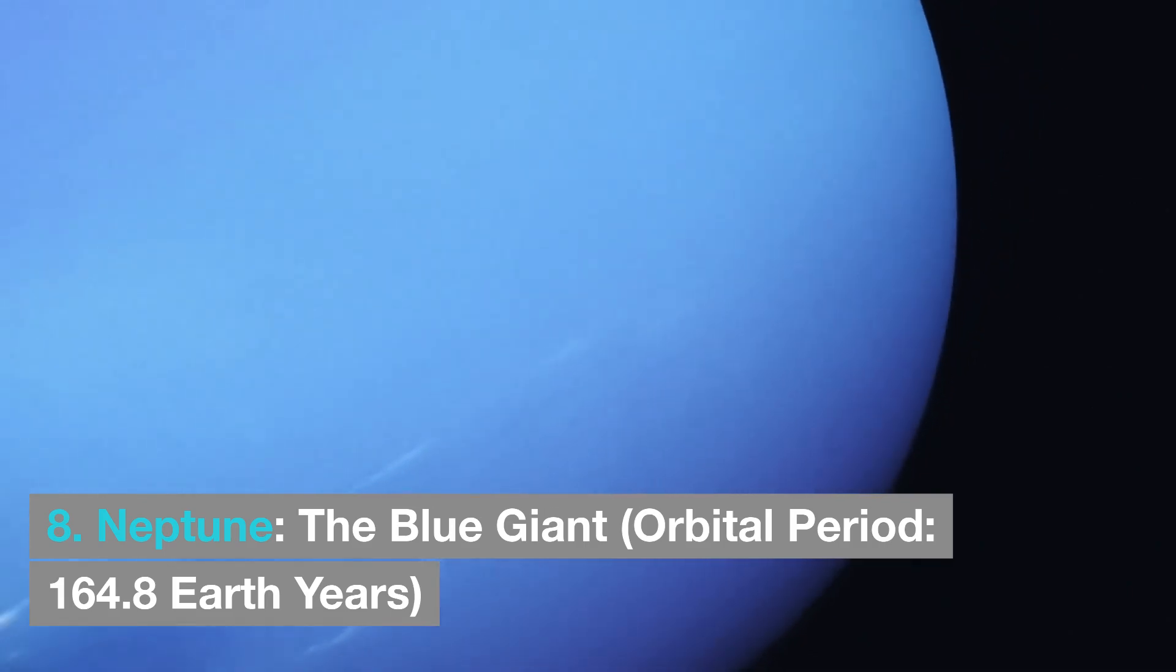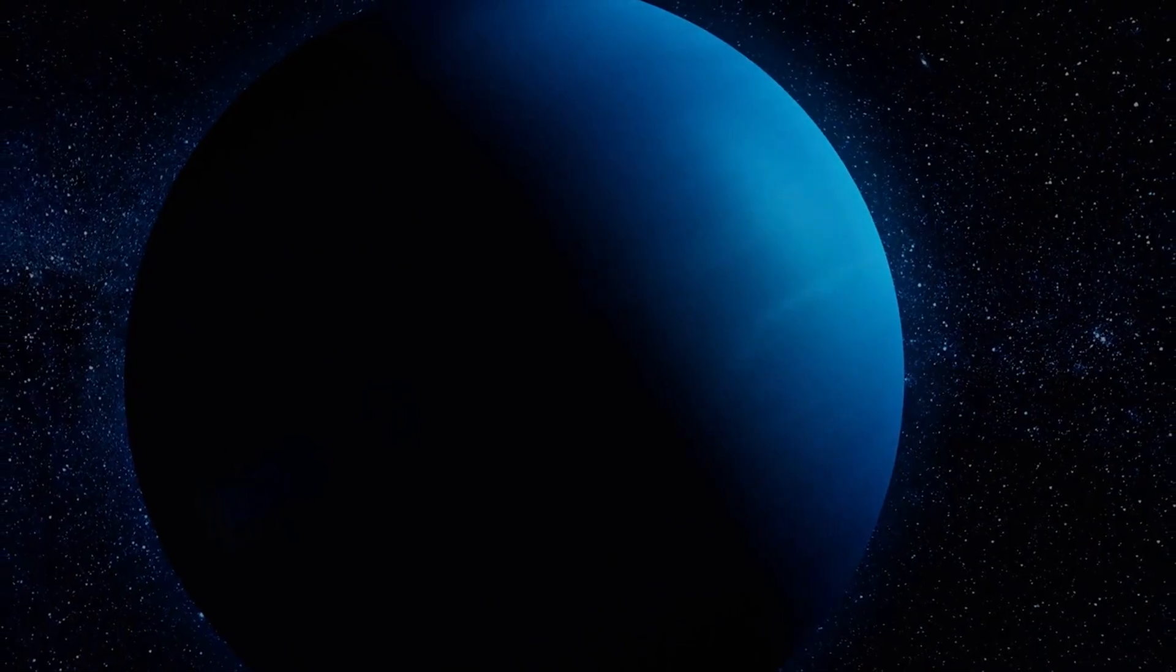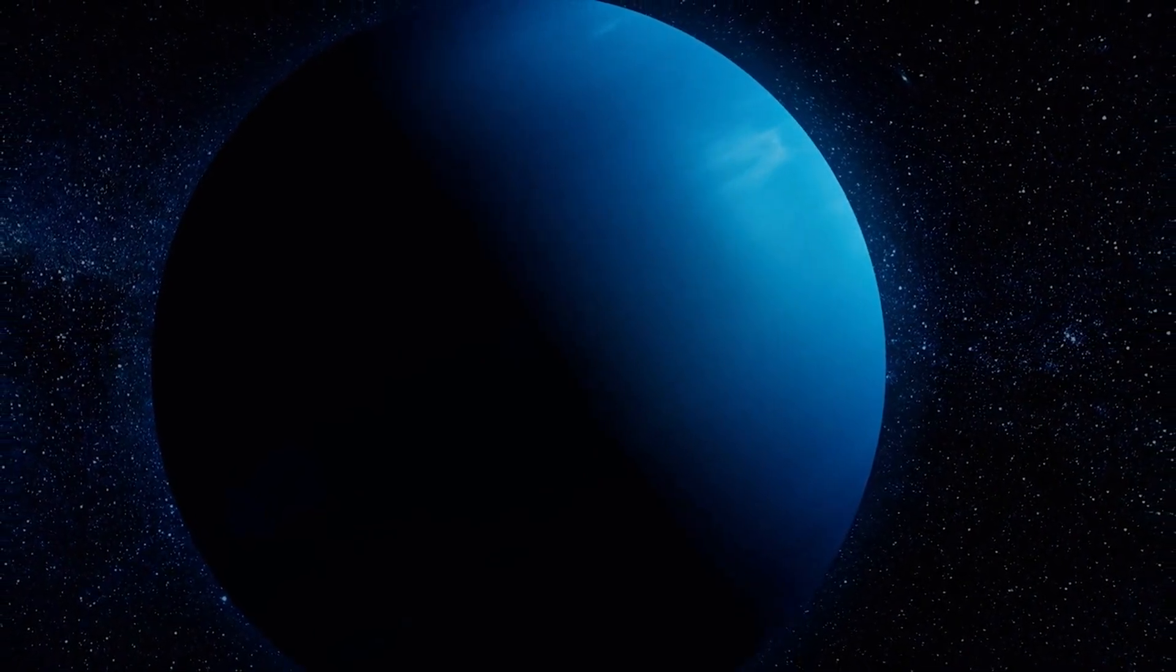Neptune, the blue giant, orbital period 164.8 Earth years. The orbit of Neptune, the planet that is furthest from the sun, takes an astounding 164.8 Earth years to complete.